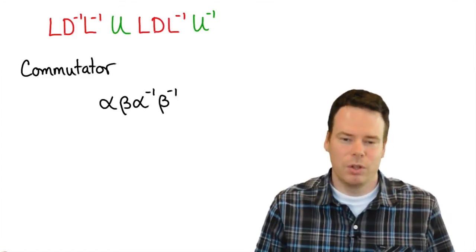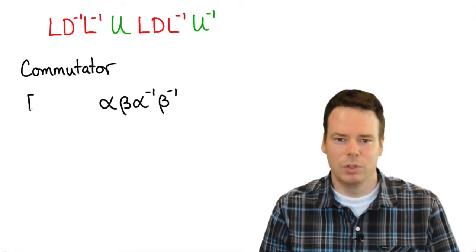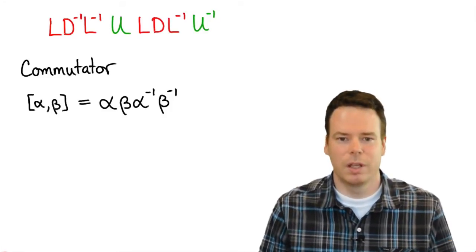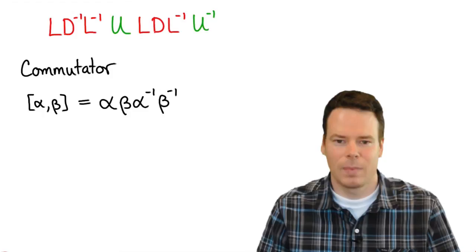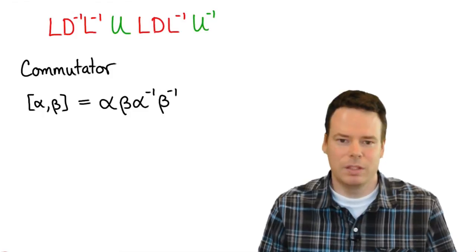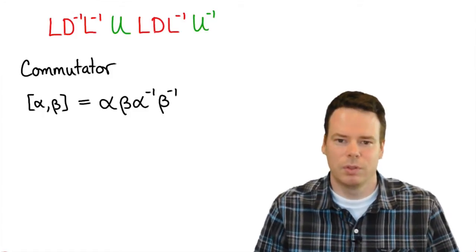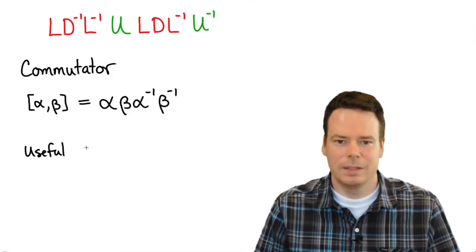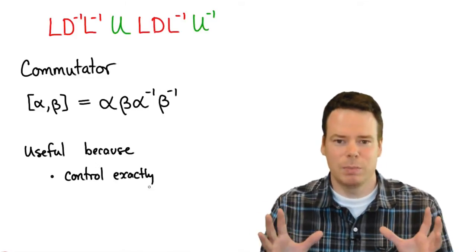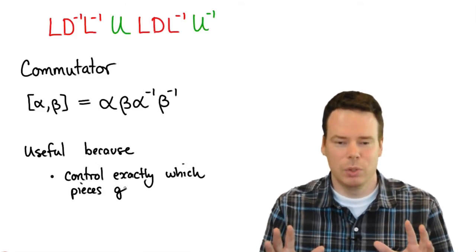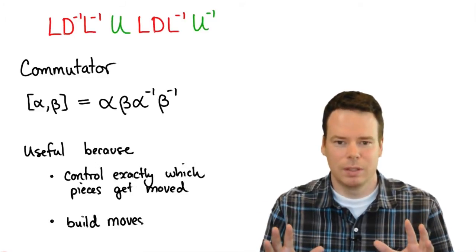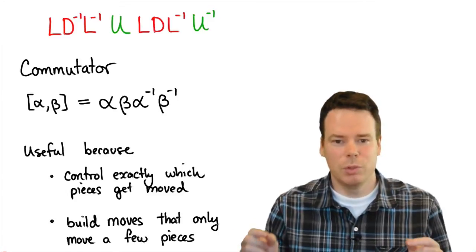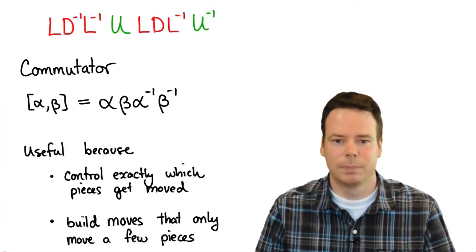We usually denote the commutator of two moves using a square bracket notation, which is just a nice shorthand. The reason move sequences of this form are so useful in solving permutation puzzles is that they allow us to control exactly which pieces on the puzzle get moved, and they allow us to build useful puzzle moves that only move a few pieces at a time.